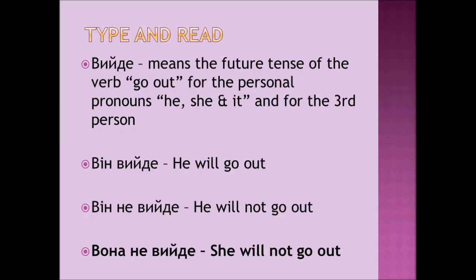ВІН ВИДЕ. That's another example. ВИДЕ means the future tense of the verb 'go out,' for personal pronouns he, she, and it, and for the third person. ВІН ВИДЕ means 'he will go out.' Let's see the negative form: ВІН НЕ ВИДЕ — he will not go out. ВОНА НЕ ВИДЕ — she will not go out.